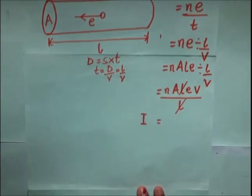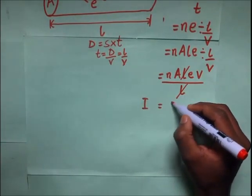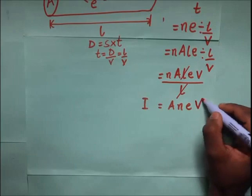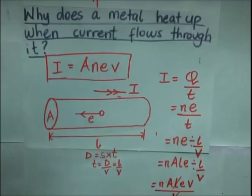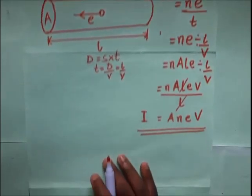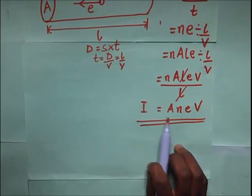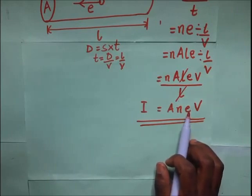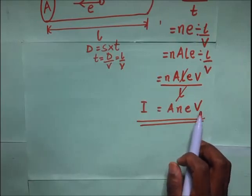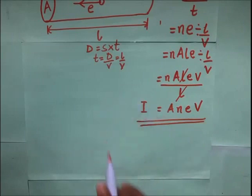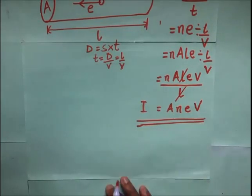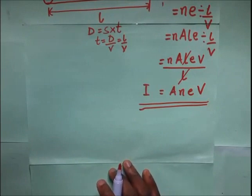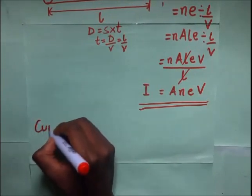We remain with the formula: current I = A·n·e·v. That is how we derive this formula. Here, A stands for the cross-sectional area of the conductor, n stands for the number of electrons in the conductor, e stands for the charge on each electron (1.6 × 10⁻¹⁹ C), and v is not volume — v is the drift velocity of the electrons.